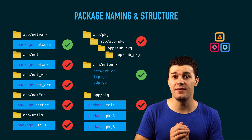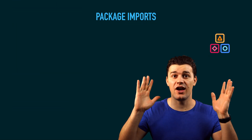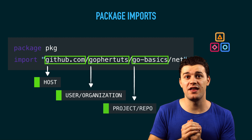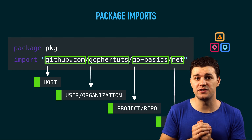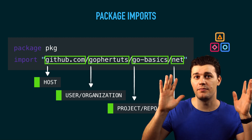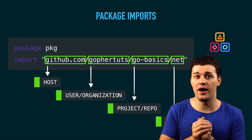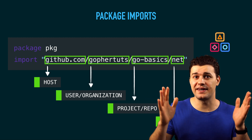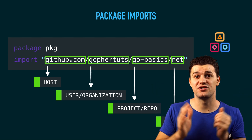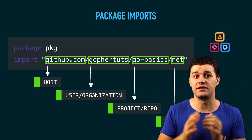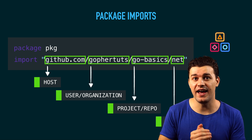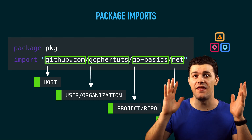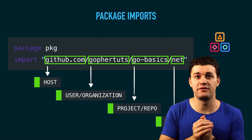When it comes to importing non-main packages in Go, there is a specific import path. For example, if you have package pkg needing to import a 'net' package from go-basics, you type: import github.com/go4tuts/go-basics/net. Here, github.com is the host Go pulls the package from, go4tuts is the user or organization, go-basics is the repository, and then Go looks for the net package inside that repository.